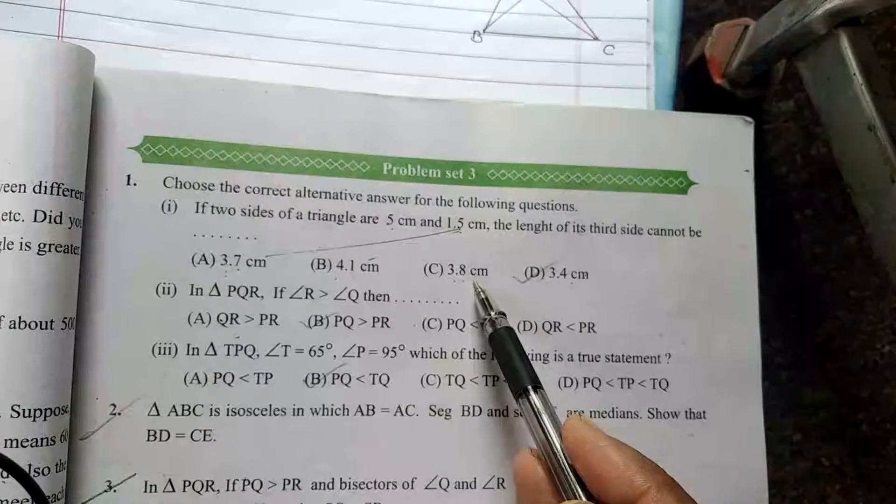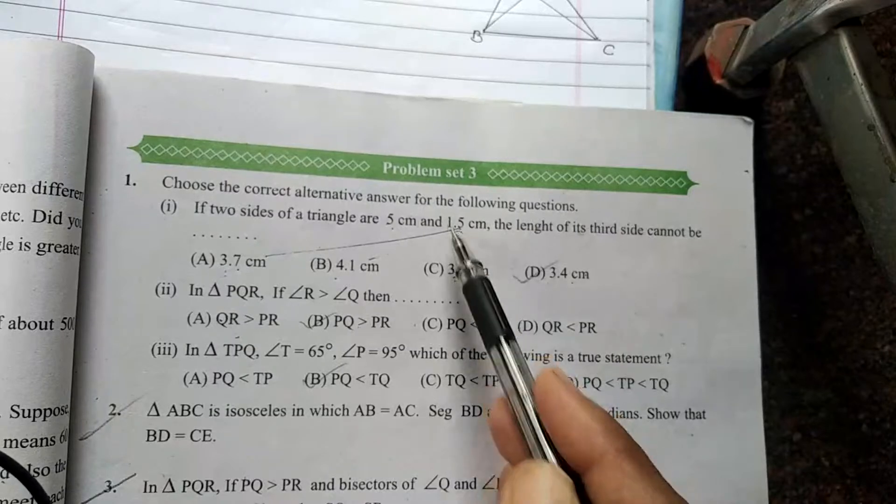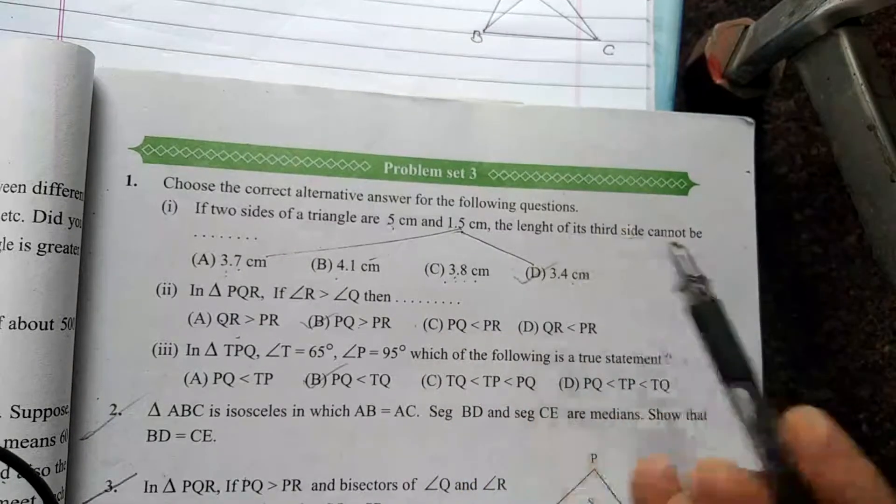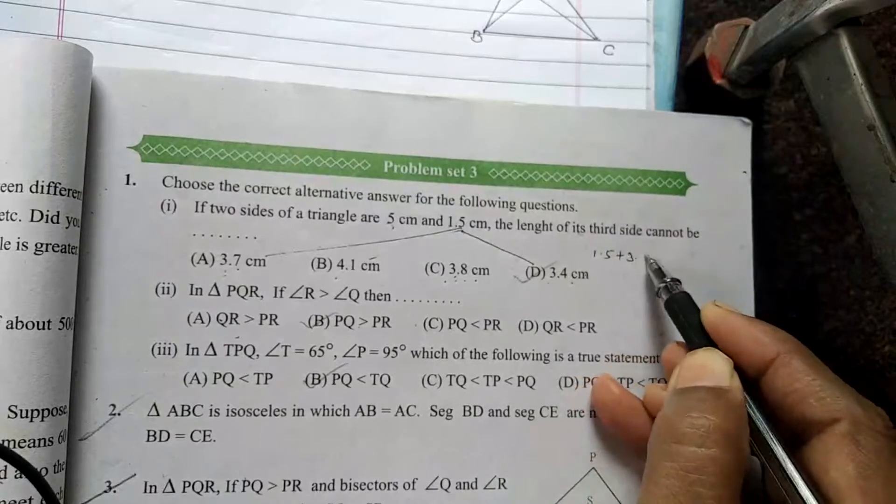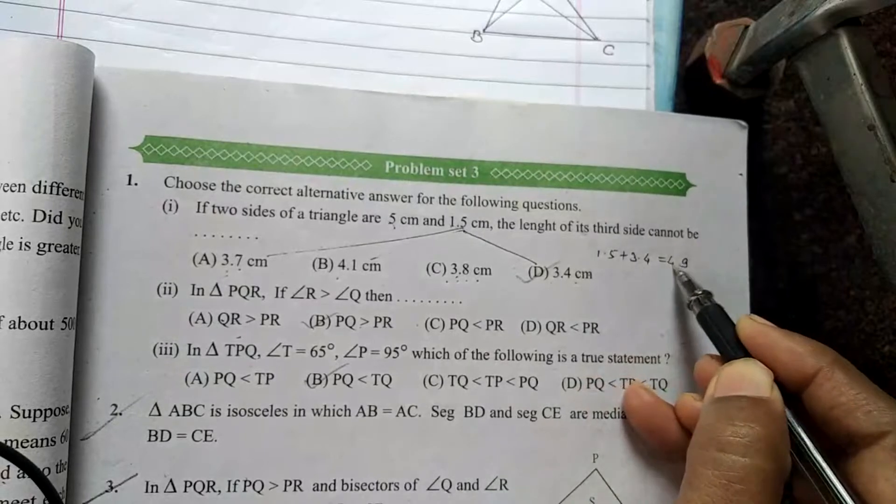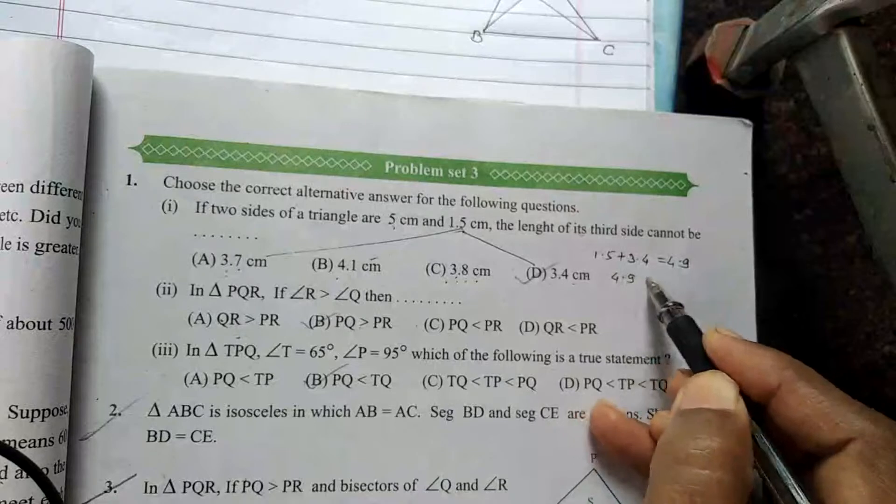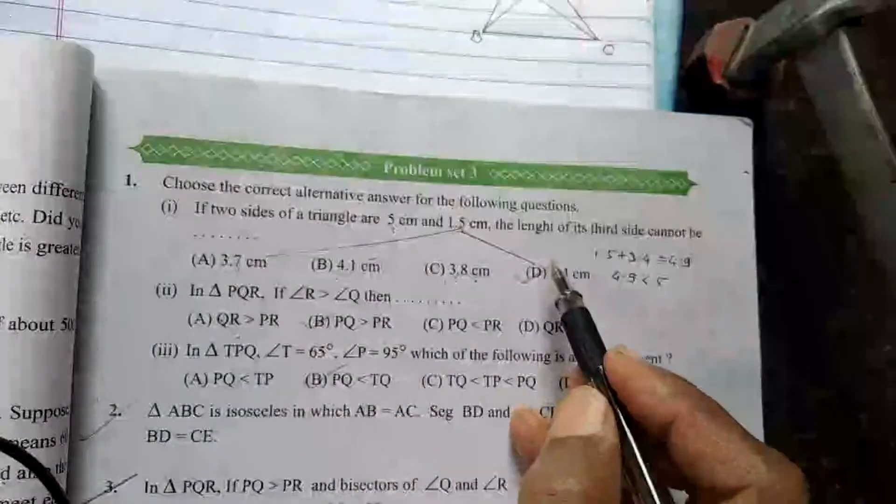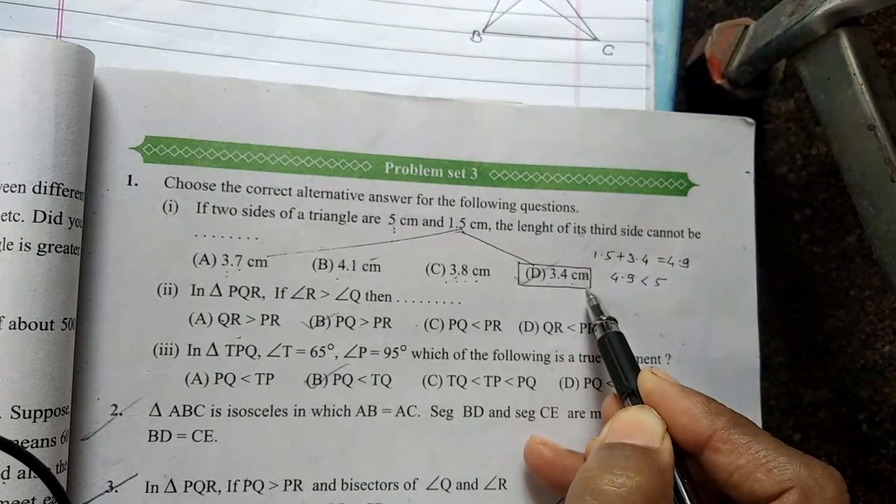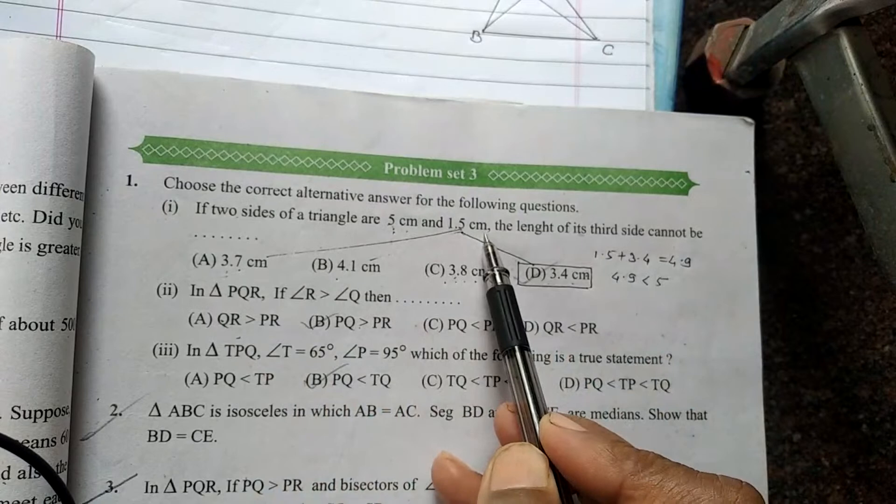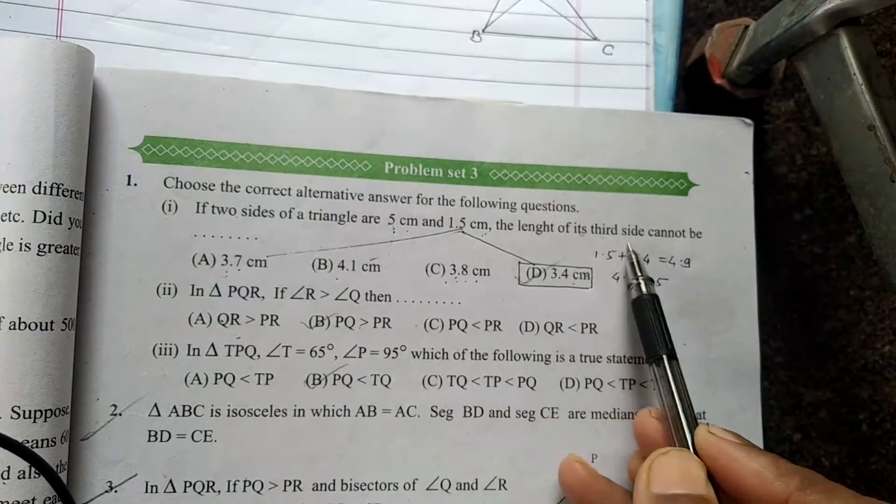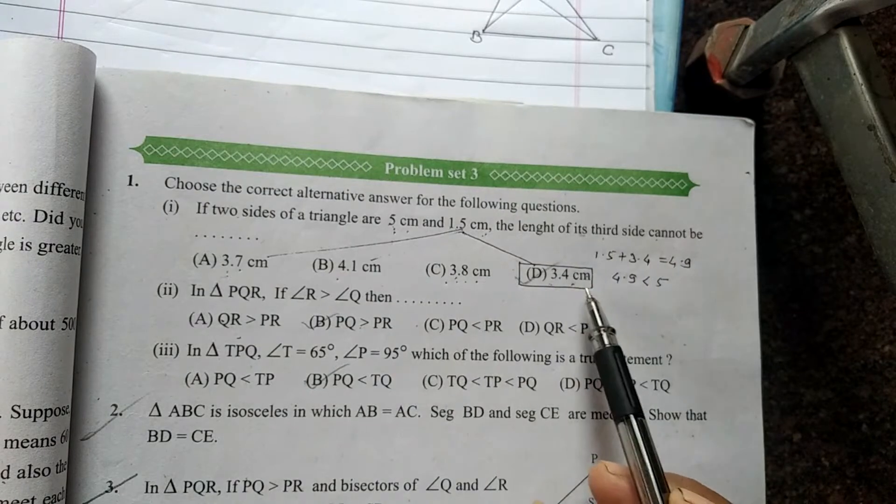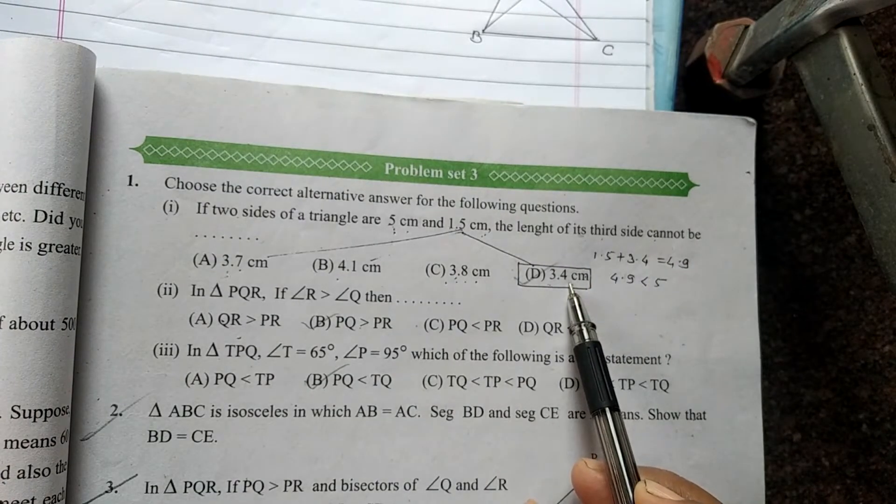Now 1.5 plus 3.4 equals 4.9, and this sum 4.9 is less than the third side, this is less than 5. Therefore, this is our final answer. If two sides of a triangle are 5 cm and 1.5 cm, the length of its third side cannot be 3.4 cm. Reason: sum of two sides is always greater than third side.